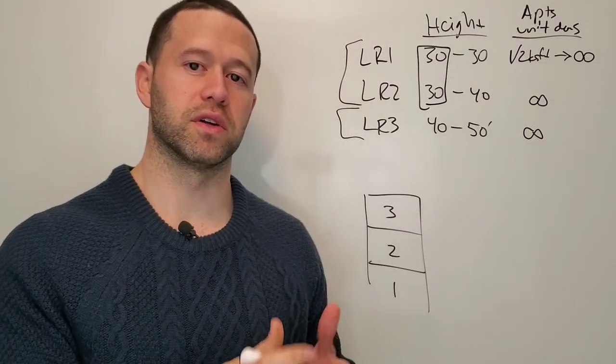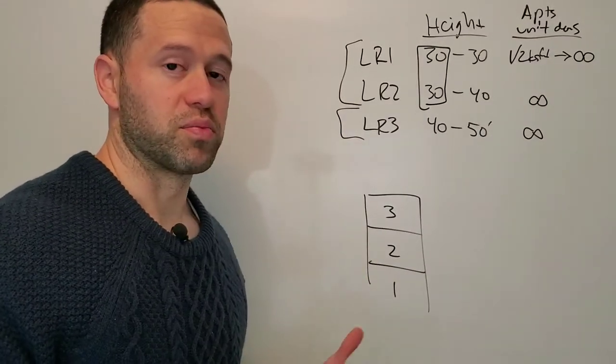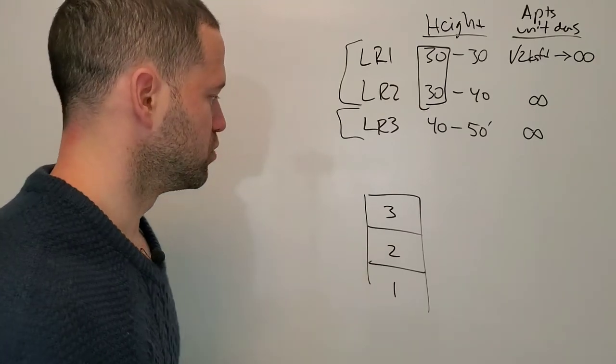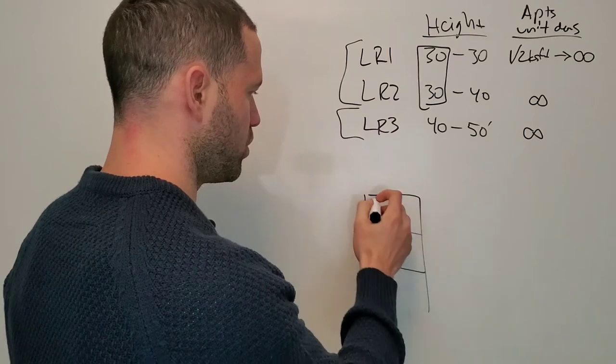Pretty much every townhome you've been in is probably three levels—some are two, but mostly three. Now when the height limit goes up to 40 feet, do you just add another level and keep building townhomes?